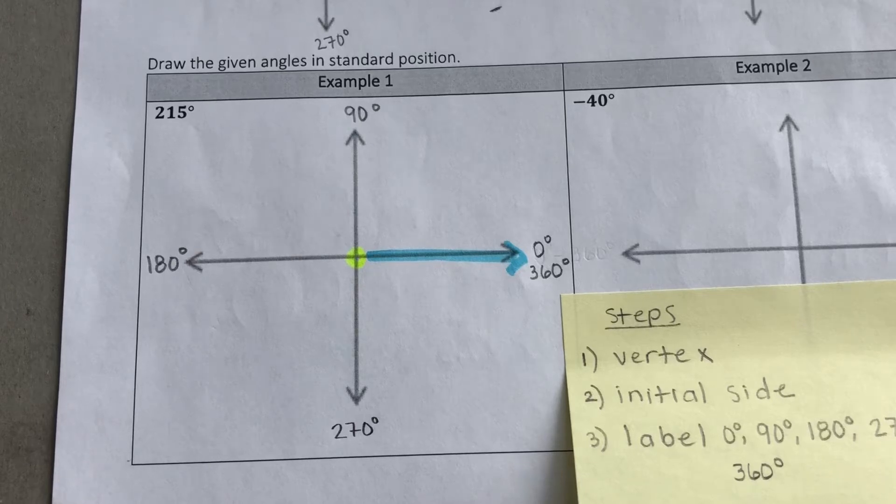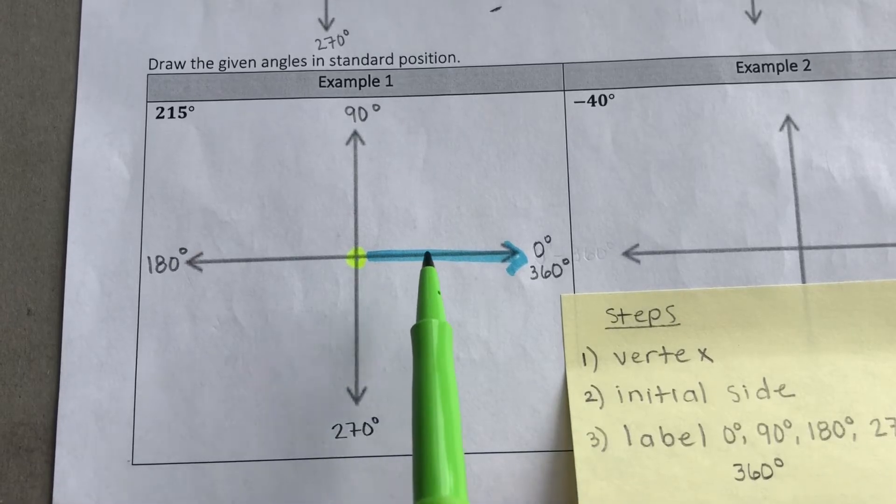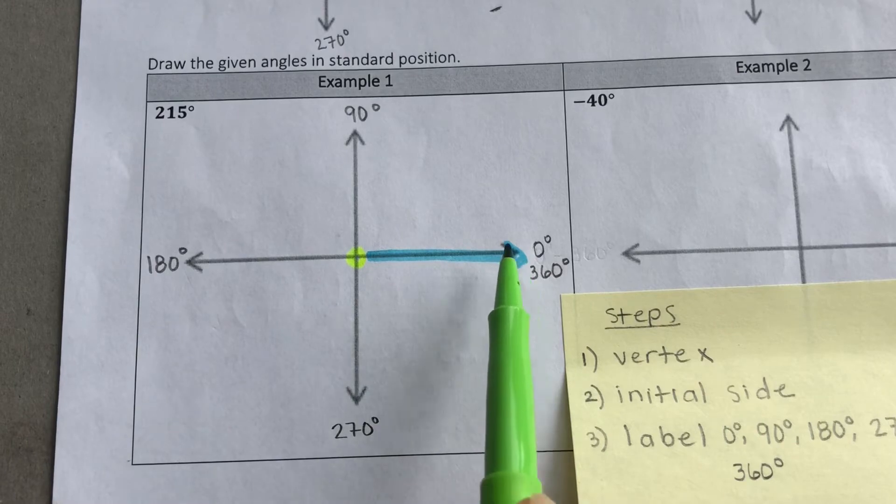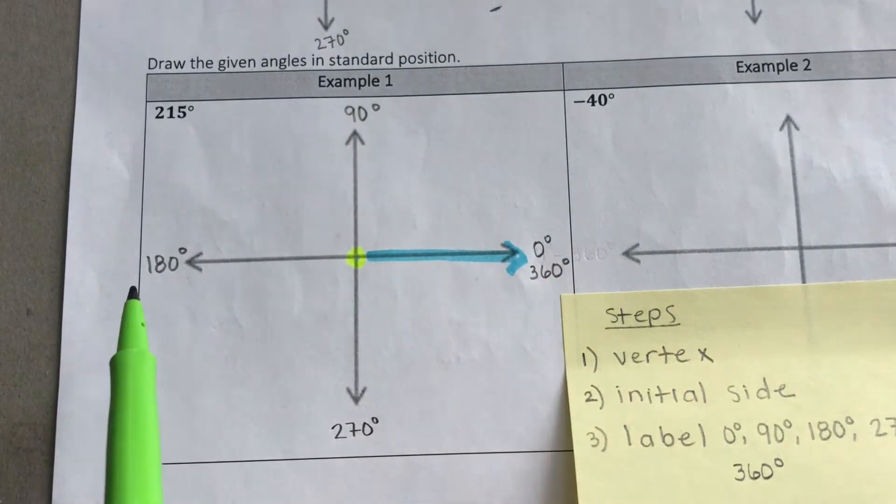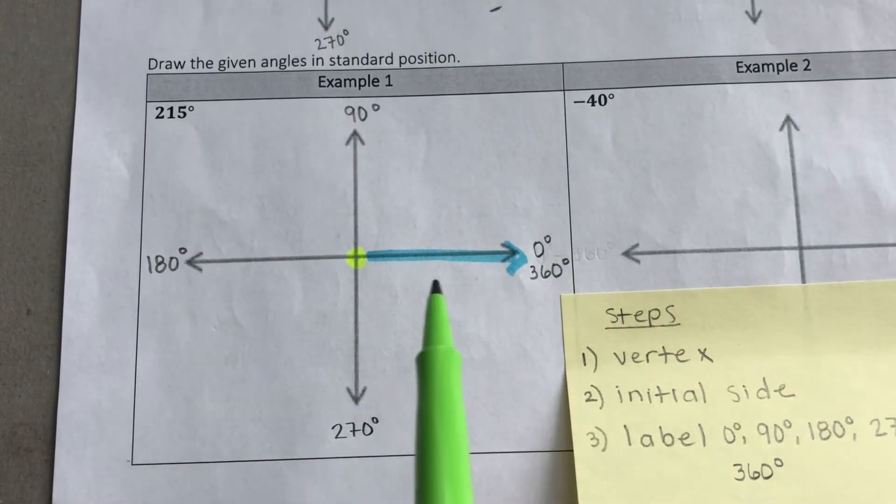Okay, so this is what you should have. There's your vertex, your initial side, and these are the angles that we know for sure.